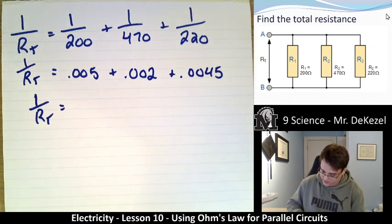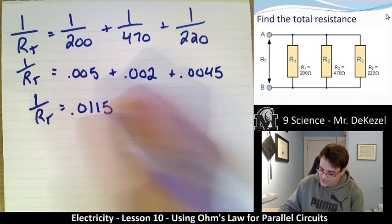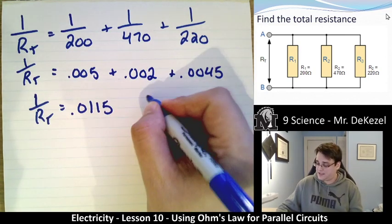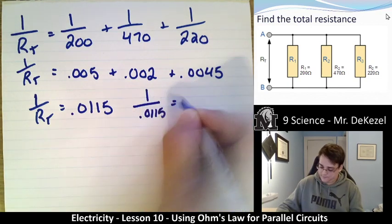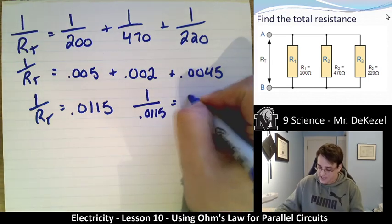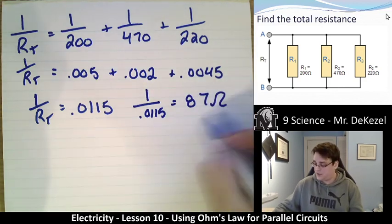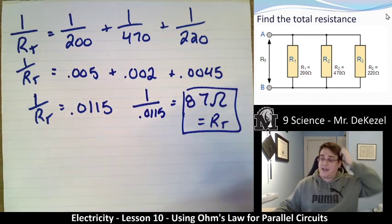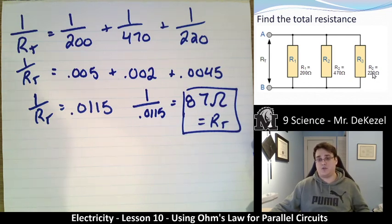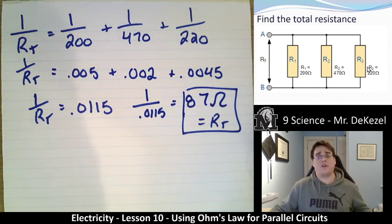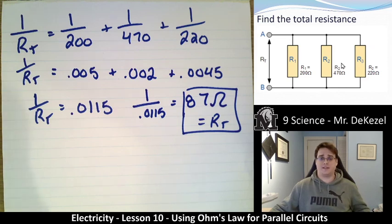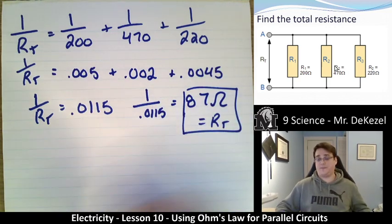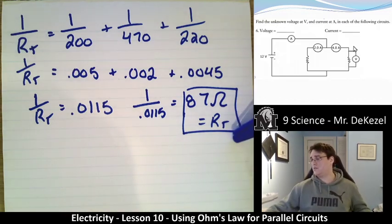So 1 over the total resistance is equal to 0.0115. Then I need to do 1 over this to find out what the resistance is. So 1 divided by 0.0115 gives us 87 ohms for our total resistance. And again, you'll notice that the resistance is less than any of the individual resistances — less than 200, less than 470, less than 220. That is key: if you get a number that's larger, you know you've gone wrong somewhere. So it's a bit of a process: take the fractions, turn them into decimals, add them up, and then take 1 divided by that number to get the total resistance.